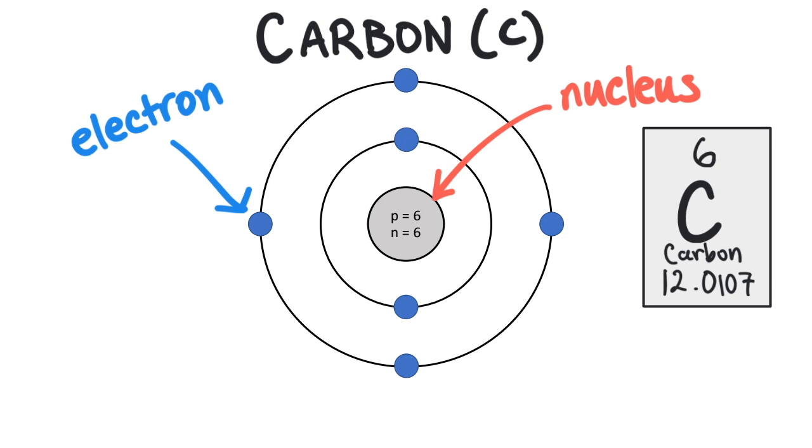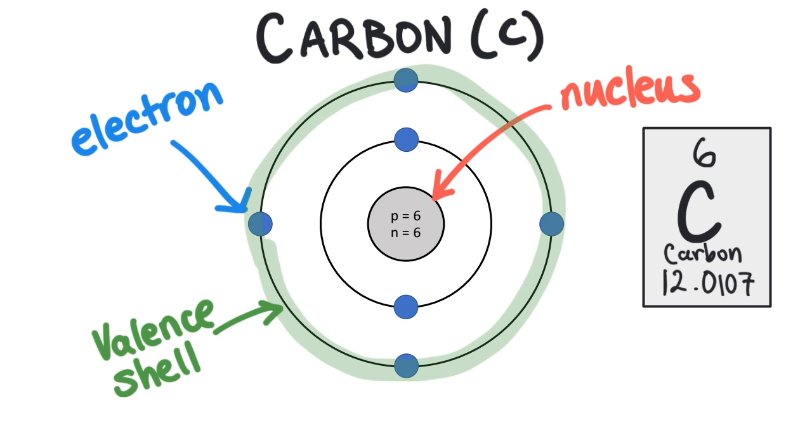The Bohr model isn't the best representation, but it can at least give an approximation of how many electrons are in the outermost energy level, known as the valence shell.